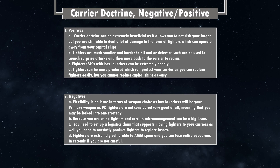Negative C: you need to set up a logistics chain that supports moving fighters to your carrier as well as consistently producing them — on top of fueling the carriers — adding extra administration overhead to your navy. Negative D: fighters are extremely vulnerable to AMM spam and you can lose entire squadrons in seconds if not careful. Fighters only take one or two hits to bring down, and once they're gone the carrier will have very little if any actual defensive capability.